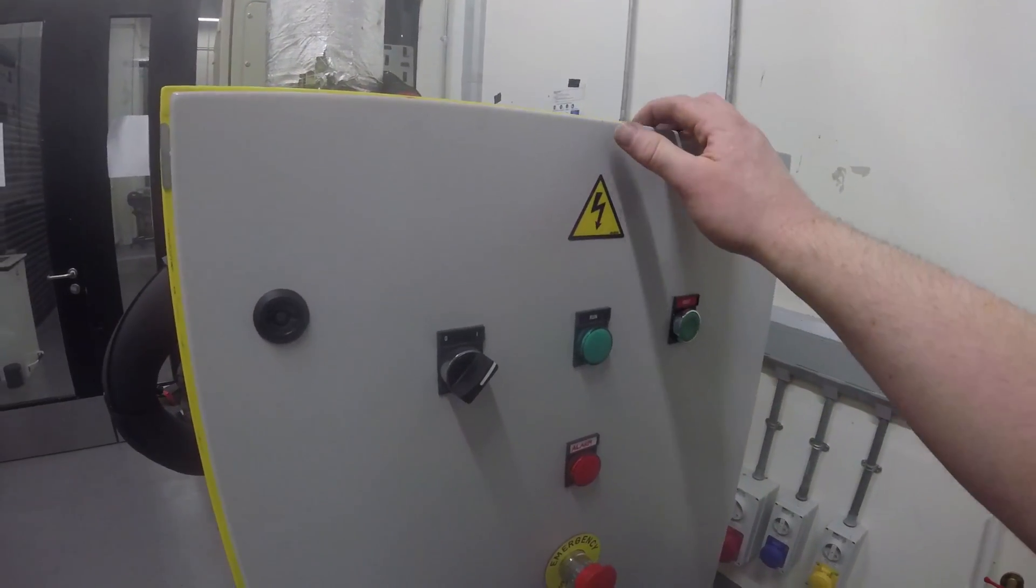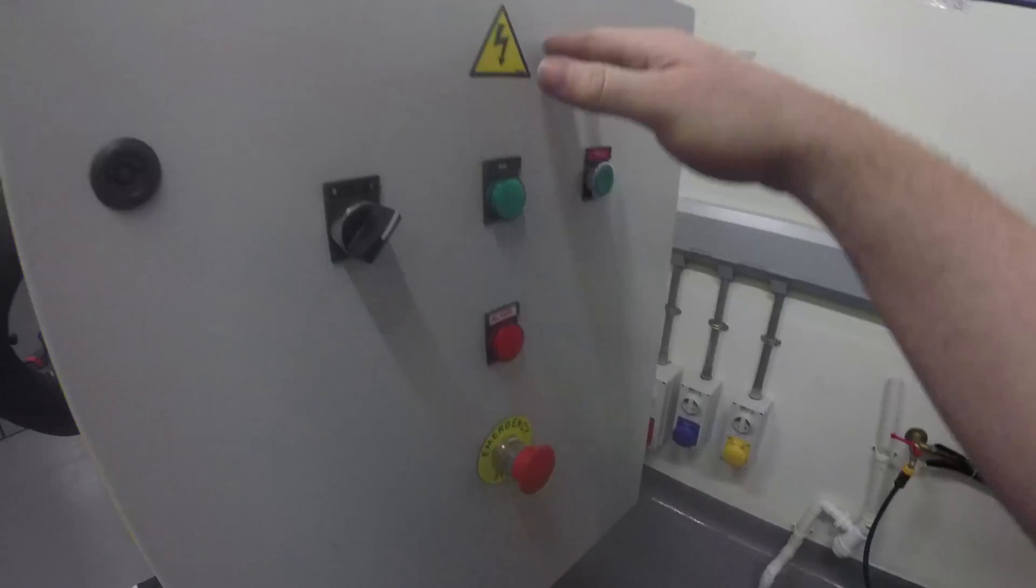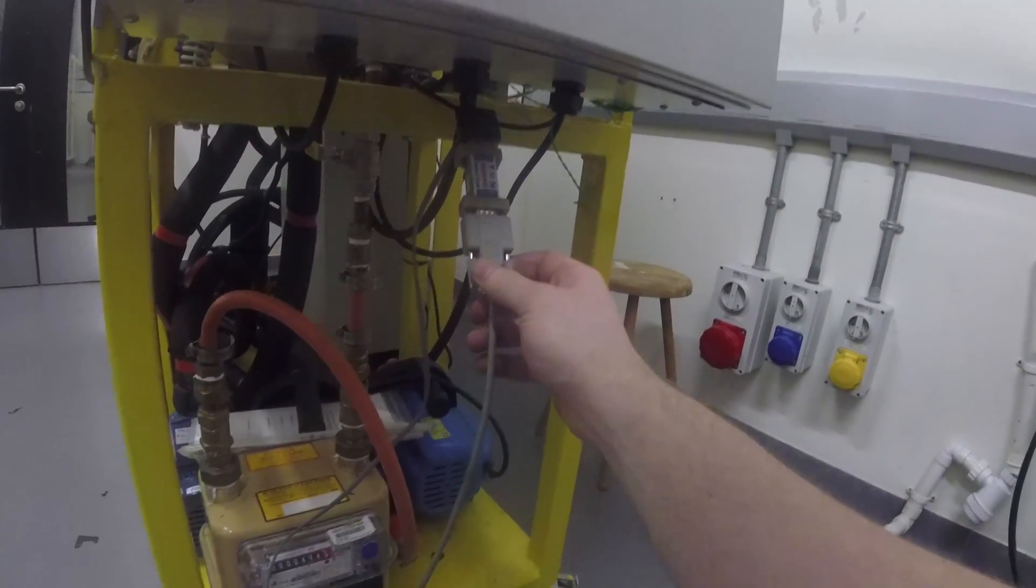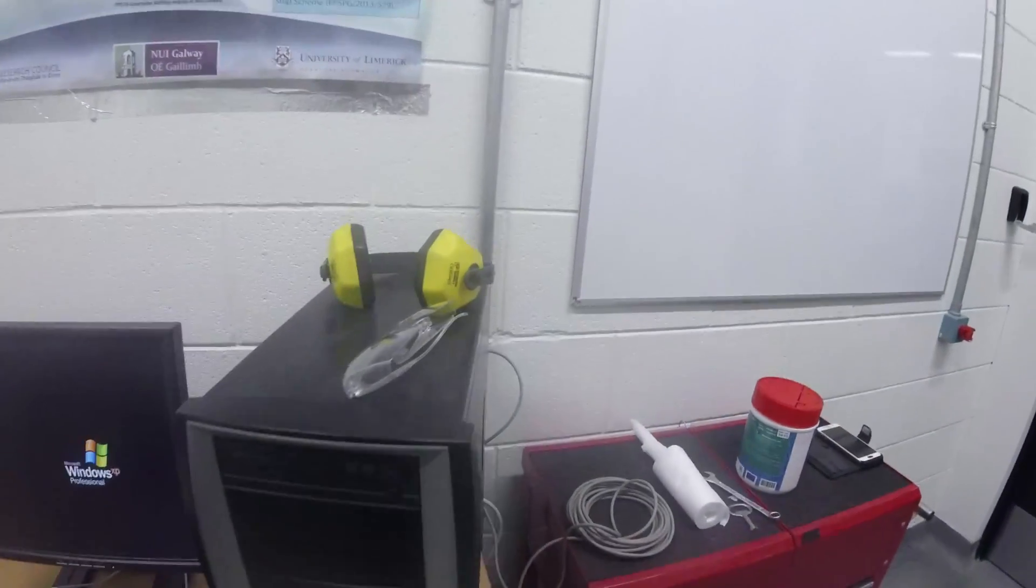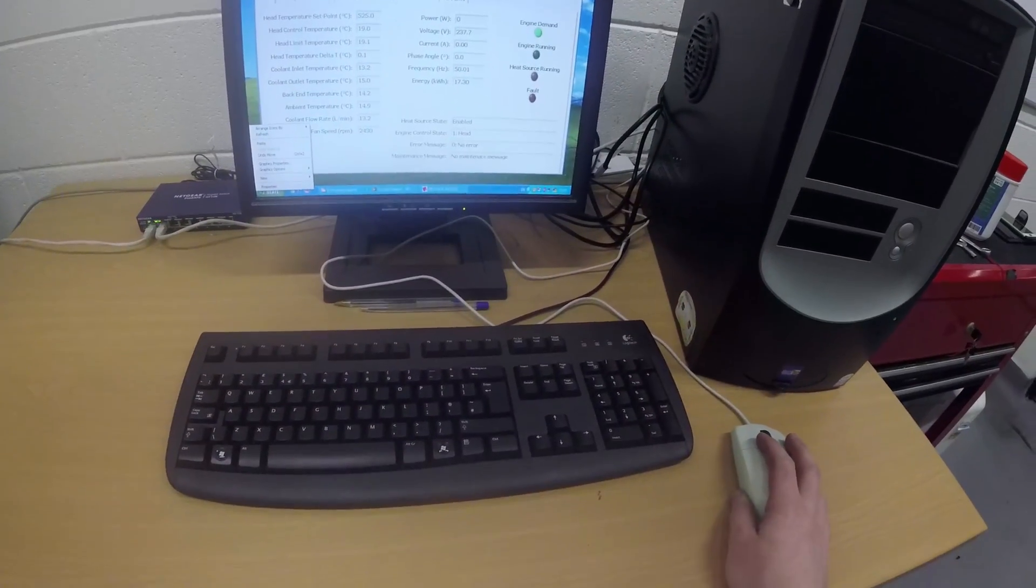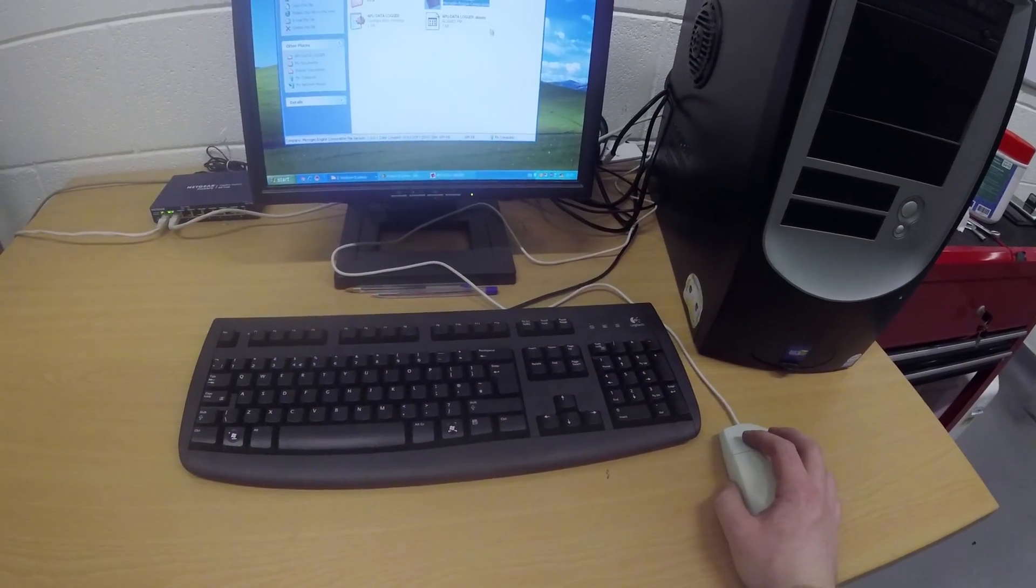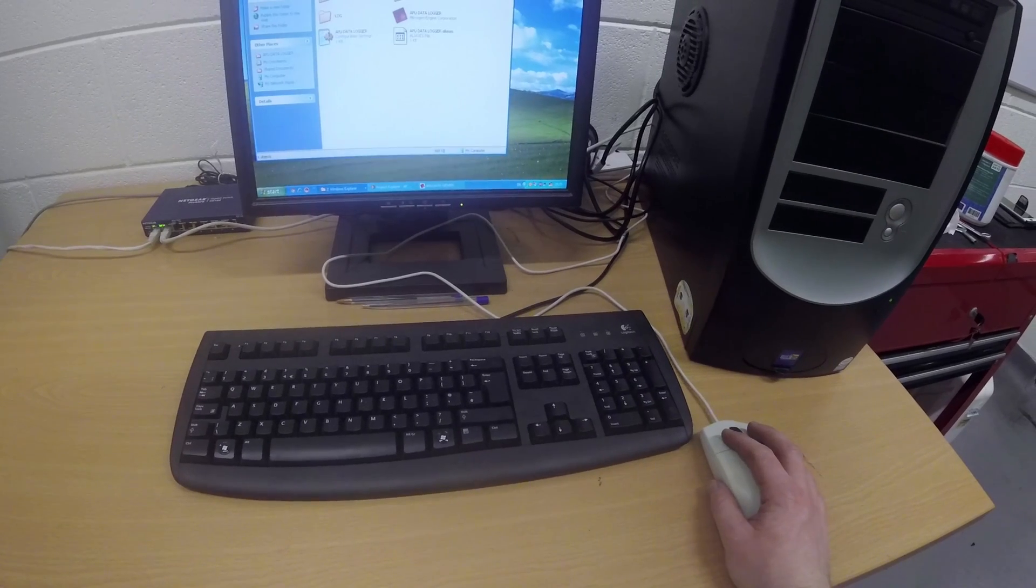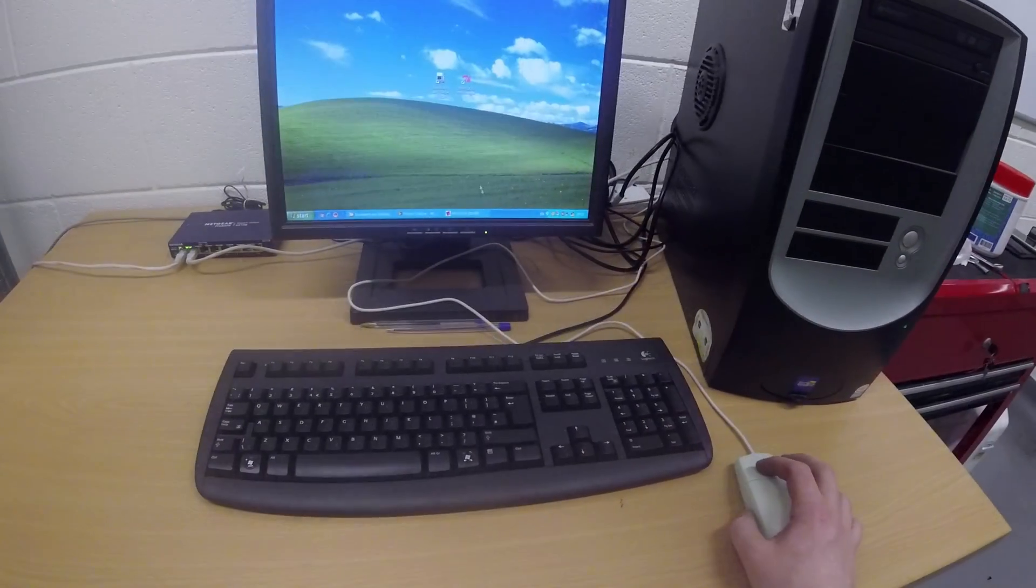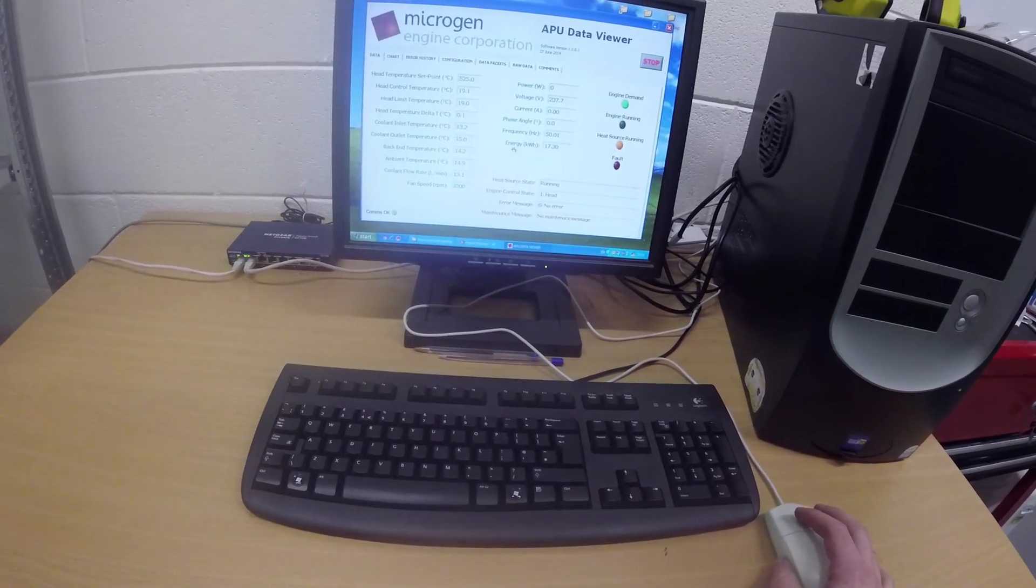If you're trying to get an actual overview of what the engine is doing, there's a serial port on the bottom here. Simply attach a serial cable to the RS-232 converter here, bring it over to our lab PC, and then open the MicroGen APU folder, APU data logger.